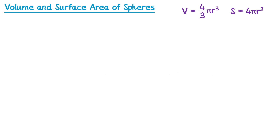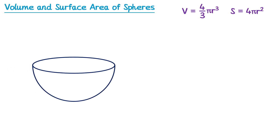Sometimes in an exam question they'll give you a shape which still has a constant radius, but it's only half the size of a sphere — and we call that a hemisphere.